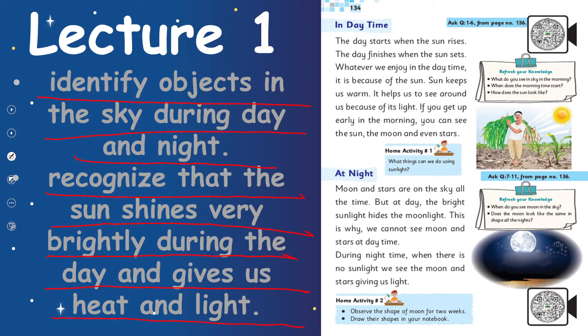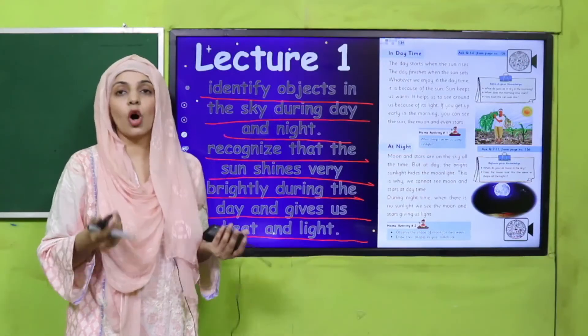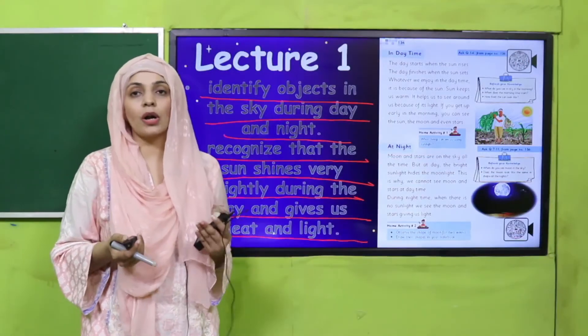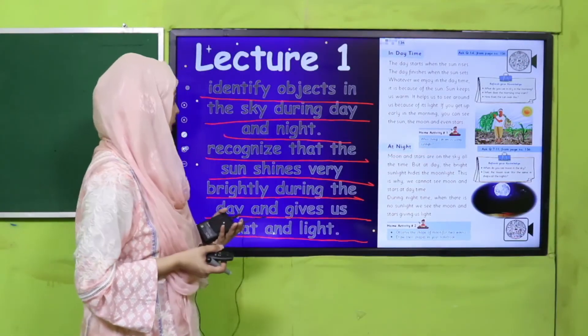The sun gives us heat and light. Pyaare bacho, jab pehla lecture hum start karenge, toh bachche woh objects jo hain, din aur raat mein jo nazar aate hain, unko identify kar sakenge.